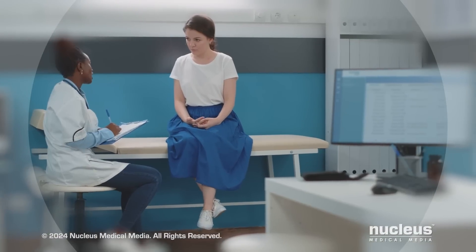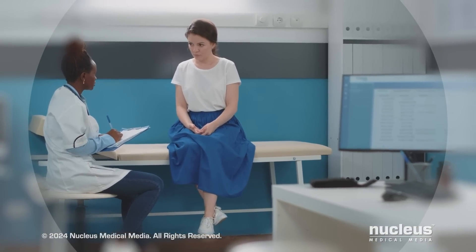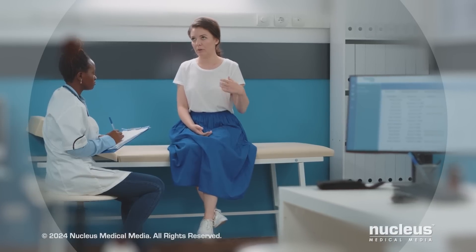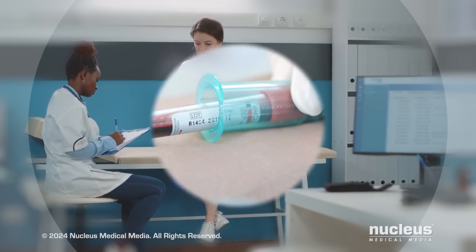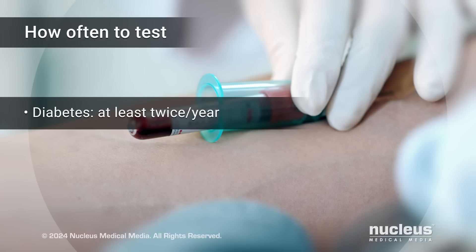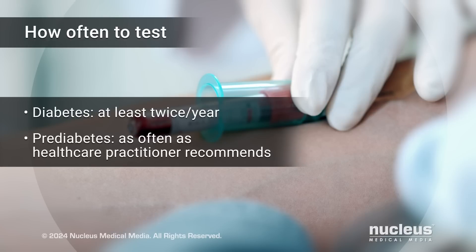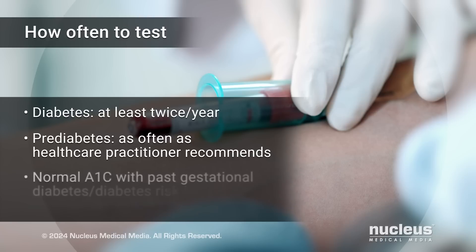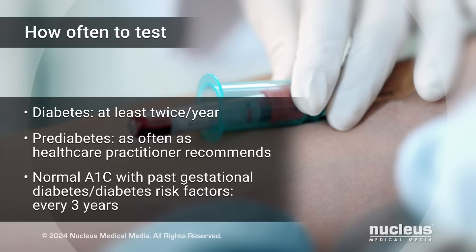If your A1c result stays high, your healthcare practitioner will talk to you about how to manage your blood sugar. People with diabetes will need to have an A1c test at least twice a year. People with prediabetes will need to be tested every year or two, or as often as your healthcare practitioner recommends. If your A1c is normal but you've had gestational diabetes, or you have risk factors for diabetes, then you will need the test every three years.